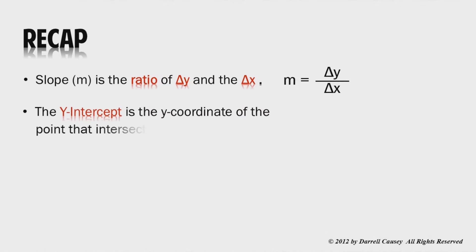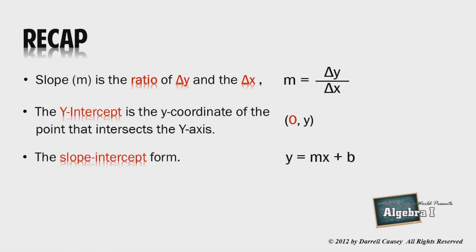Okay, time for a recap. The slope is the ratio of the change in y and the change in x. The y-intercept is the y-coordinate of the point that intersects the y-axis, and the slope-intercept form is y equals mx plus b.